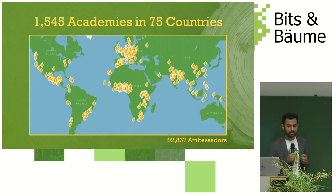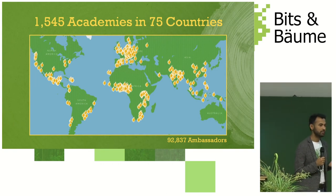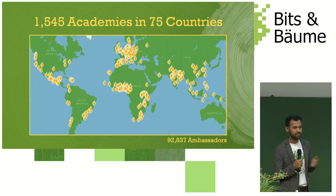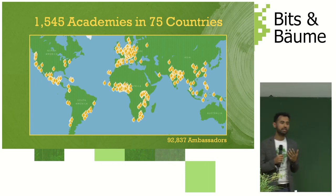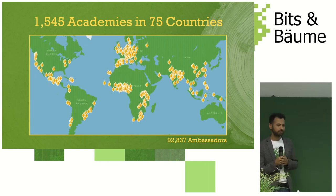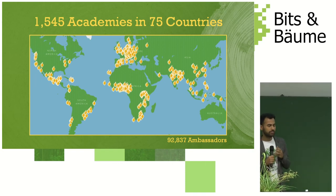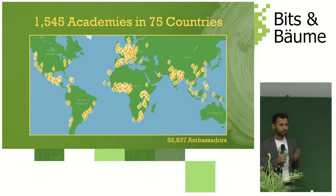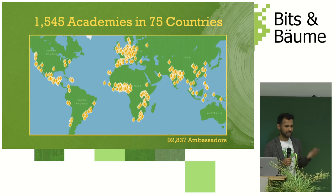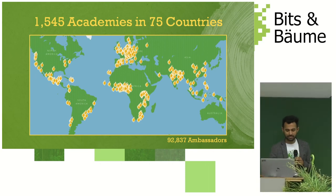We have organized 1,500 academies — day-long workshops for young children ages 9 to 14 — where they learn about greenhouse gases, the climate crisis, and what they can do as students, whether speaking with their parents, involving their friends, or taking small actions to fight the climate crisis. We have over 92,000 ambassadors so far.